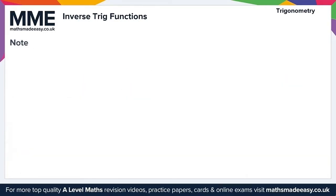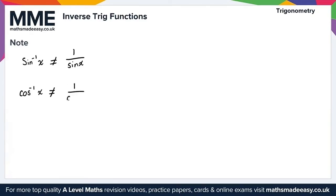It's important to note that inverse trig functions are not the same as the reciprocal trig functions. For example, sine inverse of x is not equal to one over sine x. That also applies for cosine — cosine inverse of x is not equal to one over cosine x — and tan inverse of x is not equal to one over tan x.